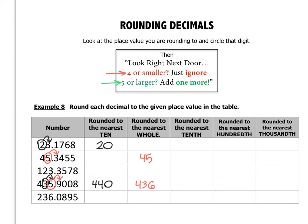For 123.3578 rounded to the nearest tenth, the digit in the tenths place is 3. To the right of 3 is a 5, so I add one more — this becomes 123.4. For 236.0895 rounded to the nearest hundredth, the 8 is in the hundredths spot. To the right of 8 is a 9, so this rounds to 236.09.